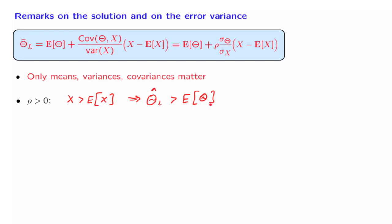So we start with our baseline estimate. But if we get a big observation, then our estimate will also be large. And conversely, if x happened to be on the lower side, below the expected value, then our estimate would also be below the expected value of theta.